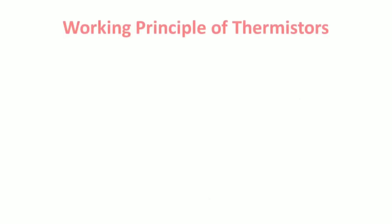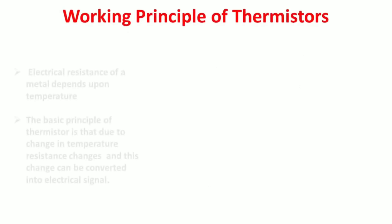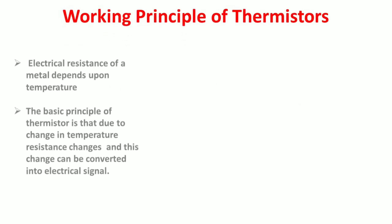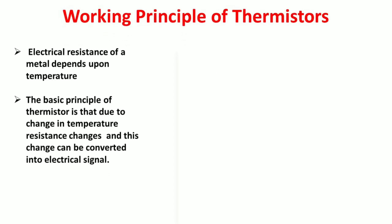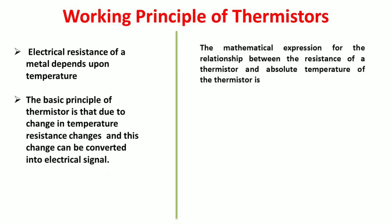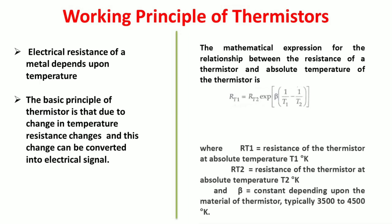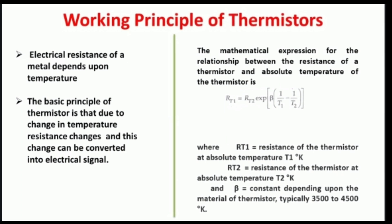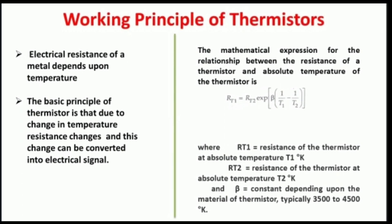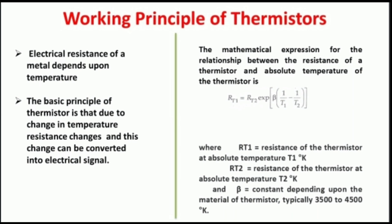Moving on to the next slide, that is principle. Thermistors are based on the principle that due to change in temperature, resistance of a metal changes. Mathematically we can express the relationship between resistance and temperature as: RT1 equals RT2 times e to the power beta times 1 by T1 minus 1 by T2. RT1 is the resistance of the thermistor at absolute temperature T1 degree Kelvin. RT2 is the resistance of thermometer at temperature T2. Beta is the constant depending upon the material of thermistor. Its value ranges from 3500 to 4500.